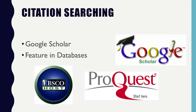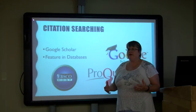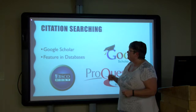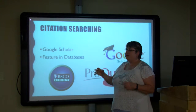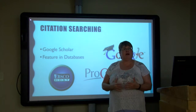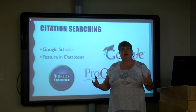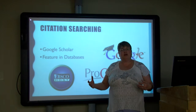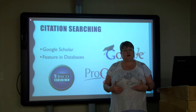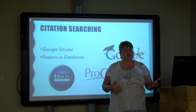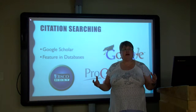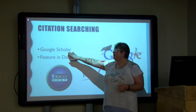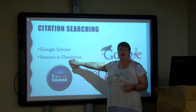Citation searching: when you write a paper or publish something, the last thing there is the references — the works cited. One way to build your snowball is to look at what has been cited not only by the article you're looking at, but also who cites that article — because if they've used the article you're interested in, chances are it will be of interest to you. This is called 'cited by,' and Google Scholar does it, as do some of our databases.